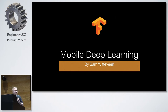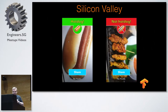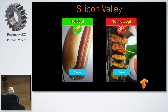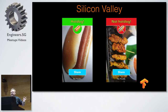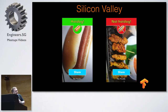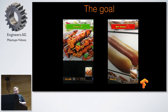How many of you have watched the TV show Silicon Valley? Almost everyone. So this is probably the most famous episode — the hot dog, not hot dog. Everyone knows what I'm talking about. So I'm going to teach you how to do this, but rather than hot dog not hot dog, we're going to do satay, not satay.